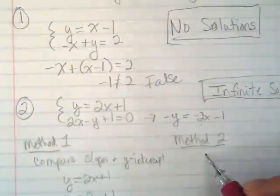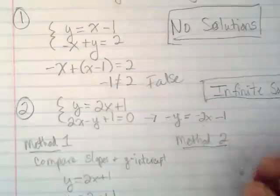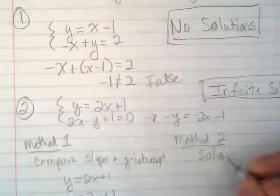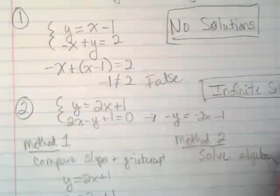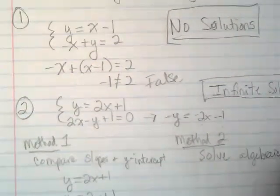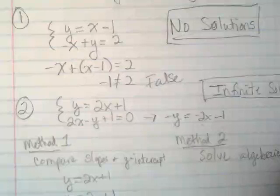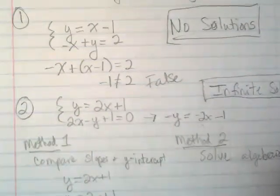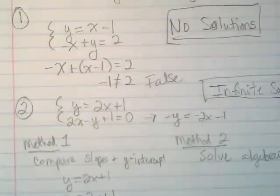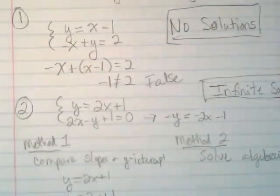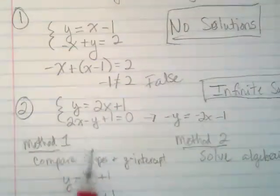Method number two is to solve the system algebraically. And by solving algebraically, that's basically what we've been doing. Unless you're a maverick. Because the algebraic ways are substitution and elimination. Graphing is not algebraically.